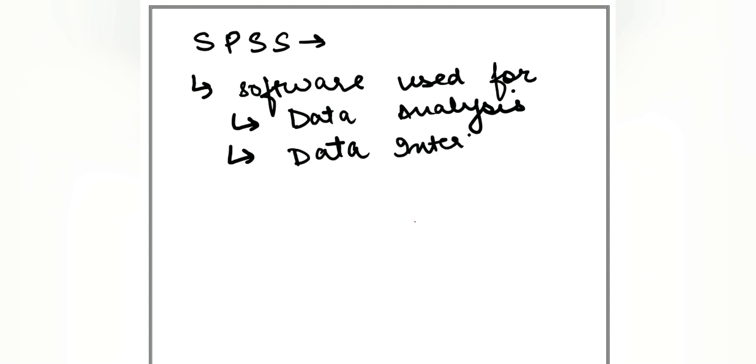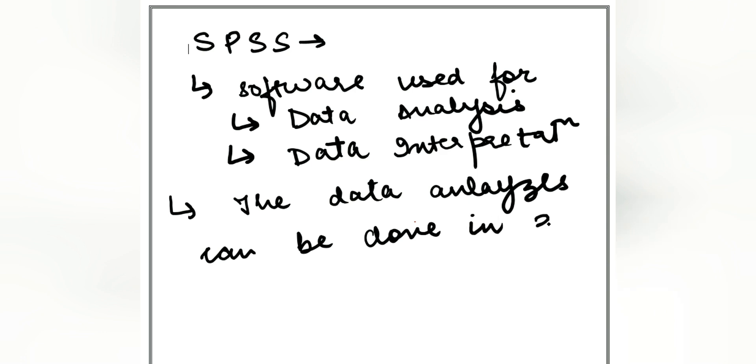SPSS which is a statistical package for social science. What does it do? A software used basically for data analysis and data interpretation. The data analysis can be done in three different ways via SPSS.